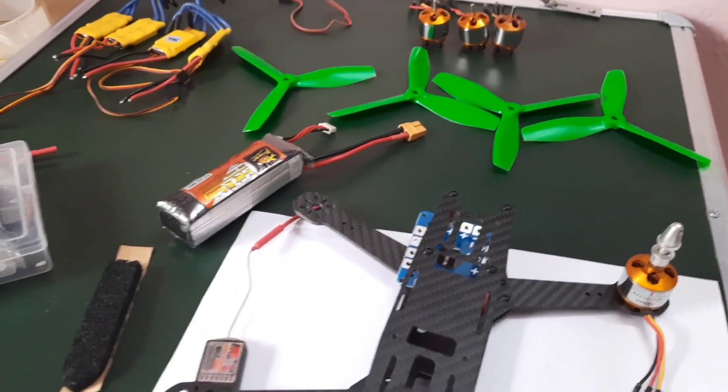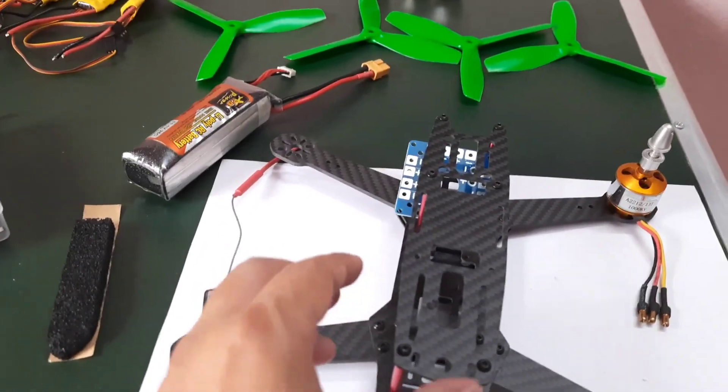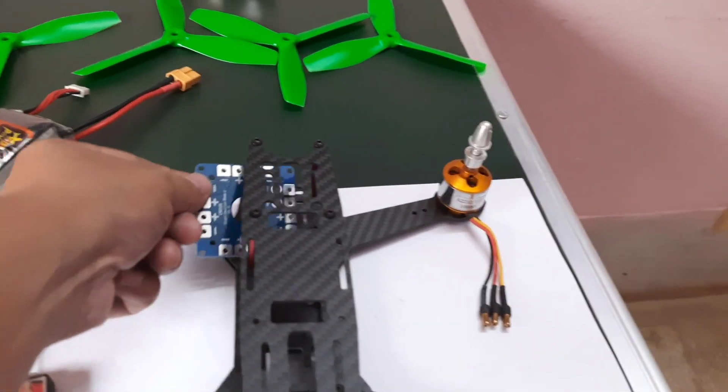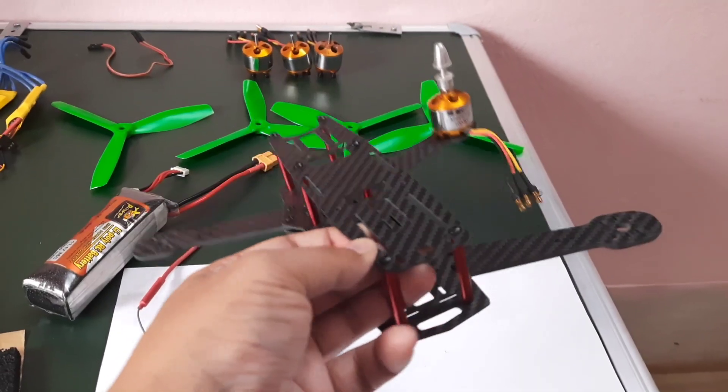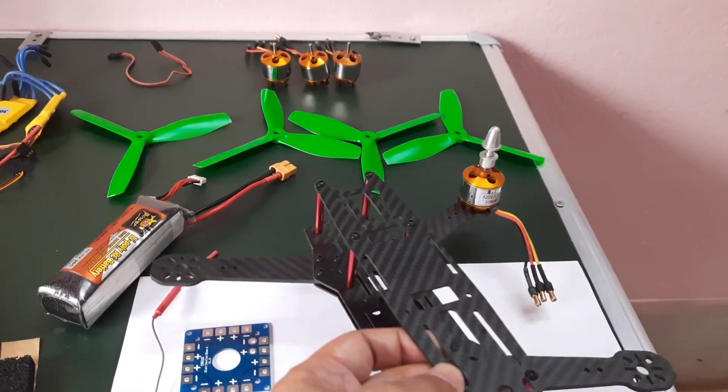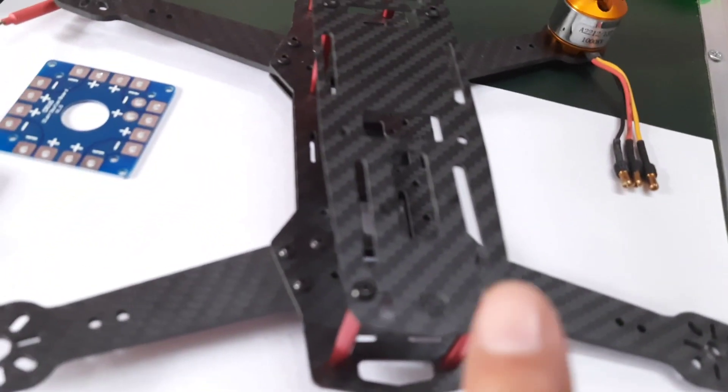These are all the parts you can see - almost all the parts. I have this frame here. This is a carbon fiber frame. It's called a Q250 frame. It's pretty good actually.